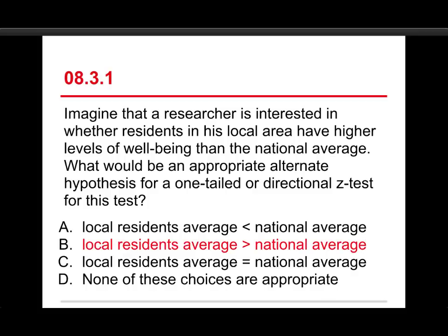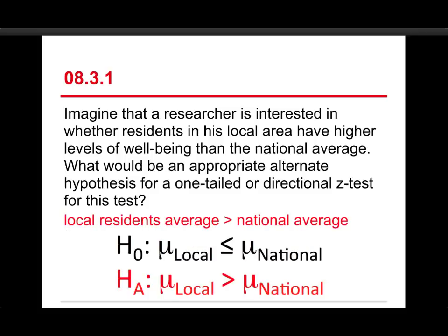Well, here's what we get. The alternative hypothesis here, that is the one that we're interested in, is that the local residents average is greater than the national average. Now, let me show you what these look like symbolically.